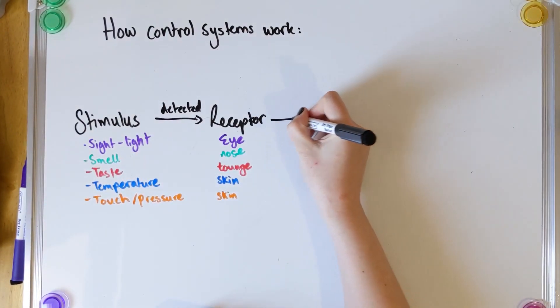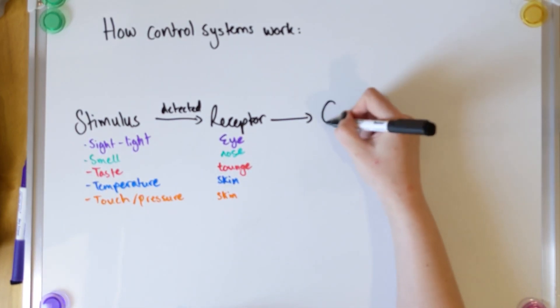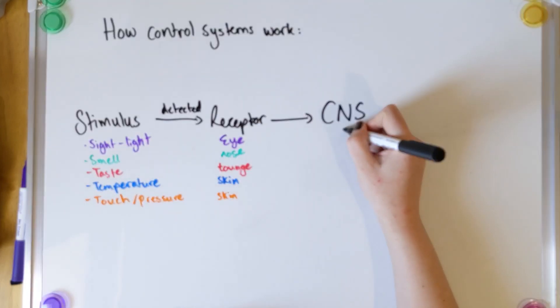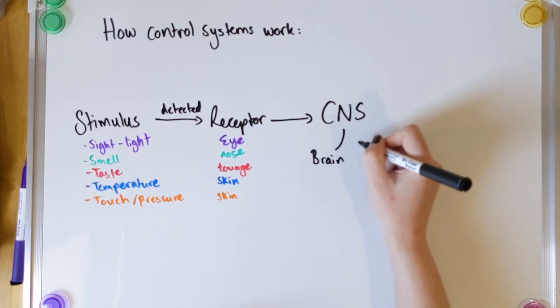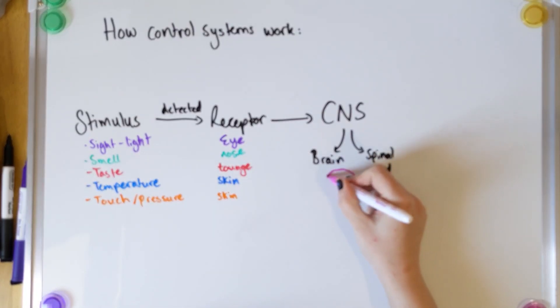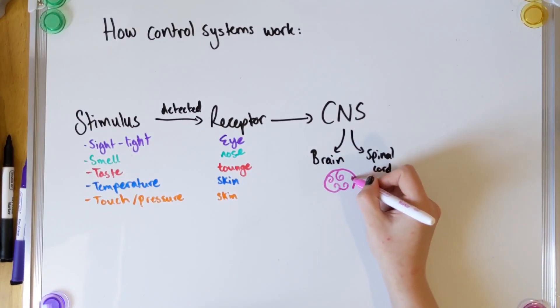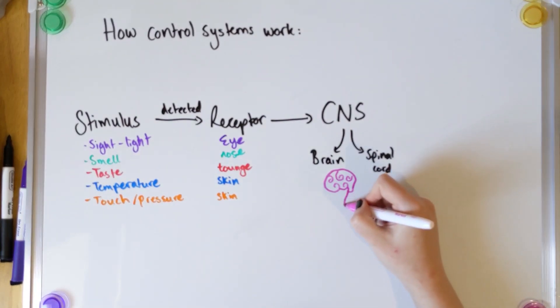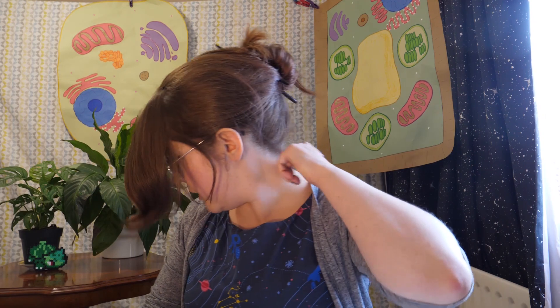The receptor will send the information to your coordination centre, or your central nervous system. Your central nervous system is just made up of your brain and your spinal cord. Your spinal cord is just the first section of spine in your neck — between those two bits, it controls your whole world. That's why if you have a break too high on your neck, it's game over, because that is what's controlling your entire body. Think of it like a computer or the decision centre — it will get the information from the stimulus and then decide what it's going to do with it, processing the information.